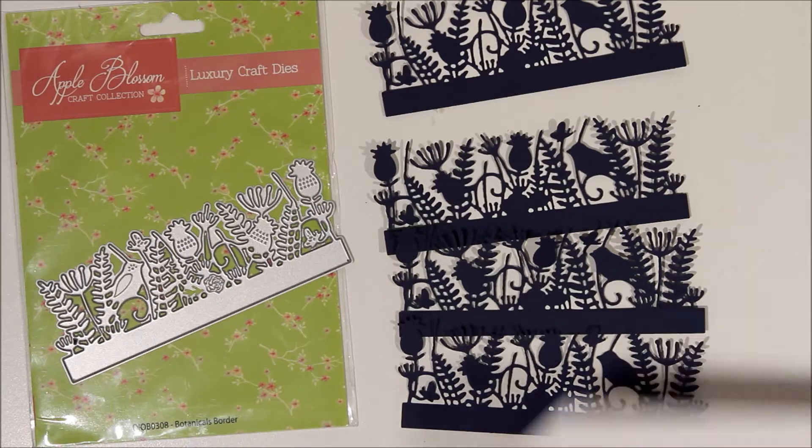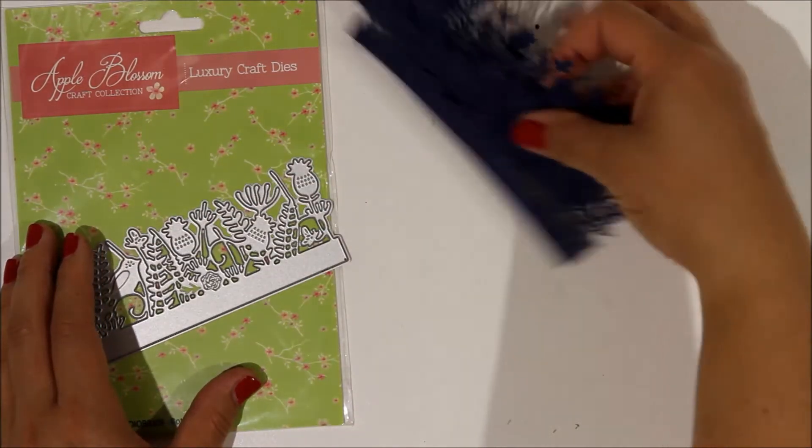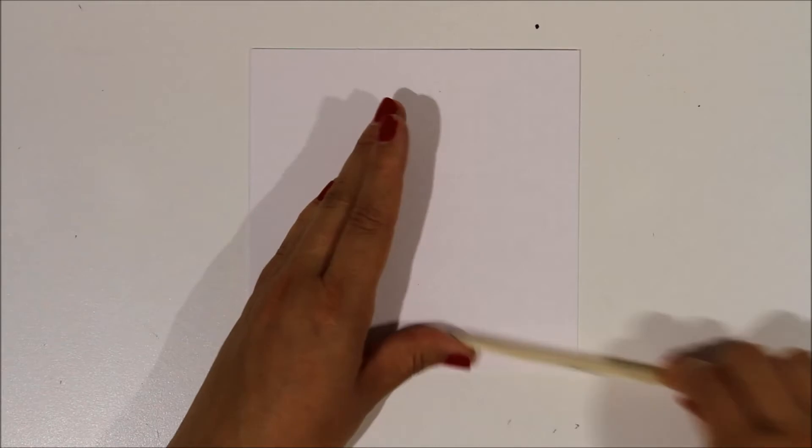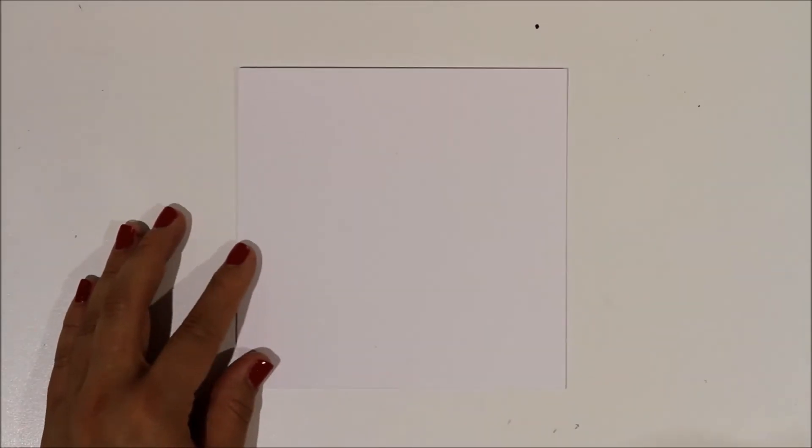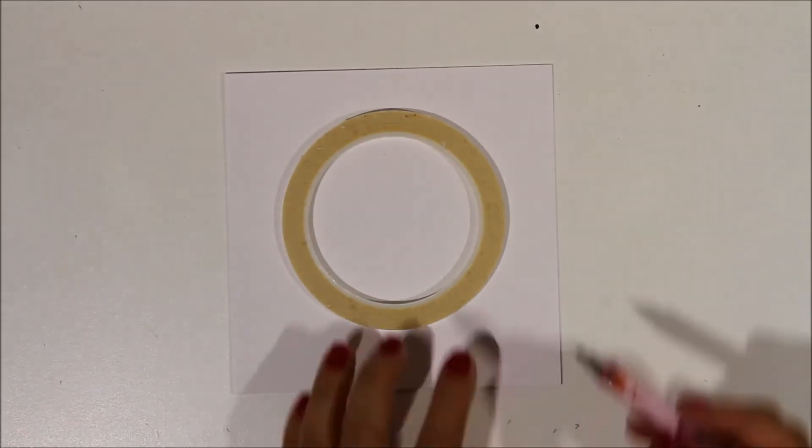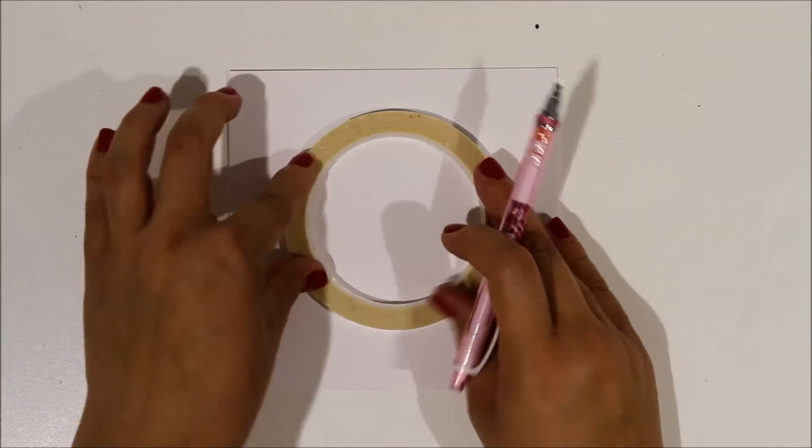I've gone ahead and pre-cut four of those die cuts out using navy blue cardstock. I'll set them aside just for a minute. I grab my card base and bone fold that like we always do. With this card I want to do something a bit different—I actually want to make a wreath on the front of it. So I'm going to draw around my double-sided tape and make a light pencil line for me to follow around.